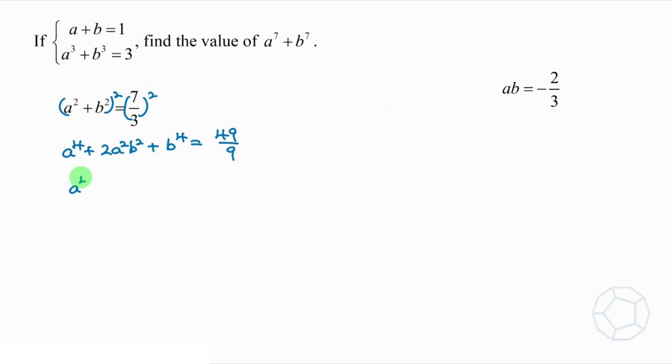So a to the power 4 plus b to the power 4 is equal to 49 over 9 minus 8 over 9, which is 41 over 9.